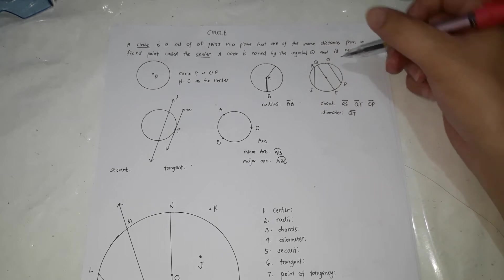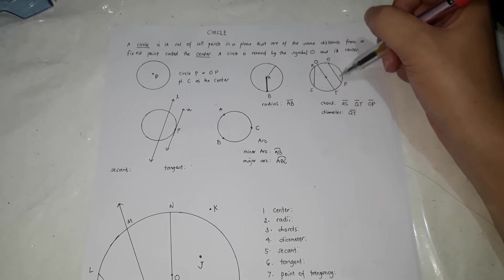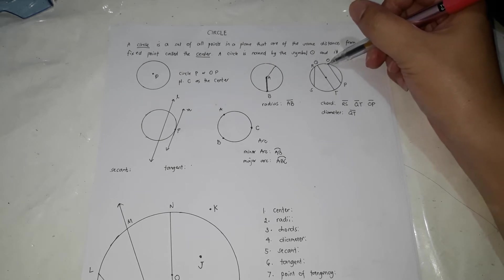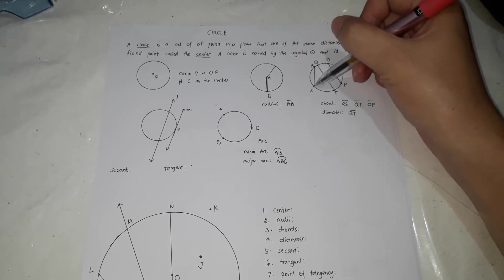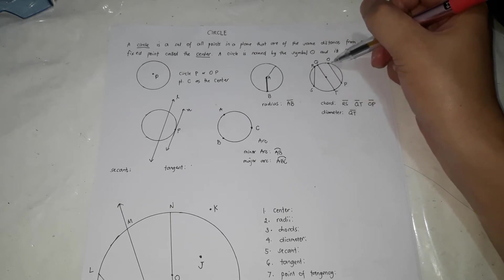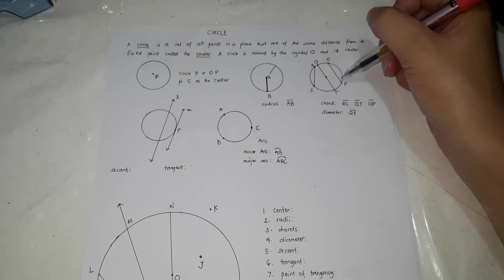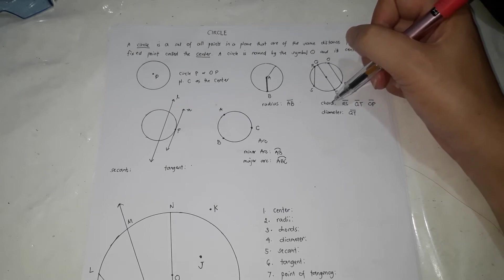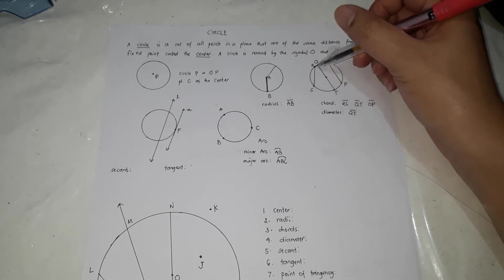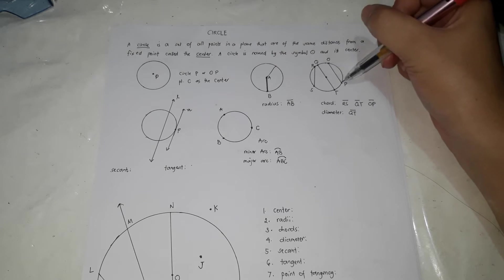For this one, if you notice, they all have the same characteristics. The endpoints are on the circle. All of them are line segments whose endpoints are on the circle. Those are called chords. They are chord RS. The name is chord RS or line segment RS, line segment QT, line segment OP.